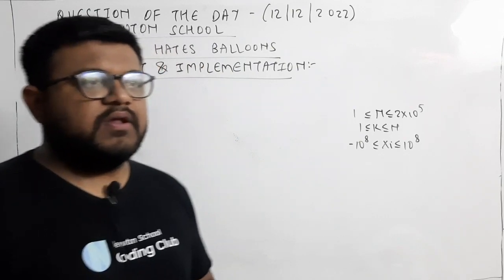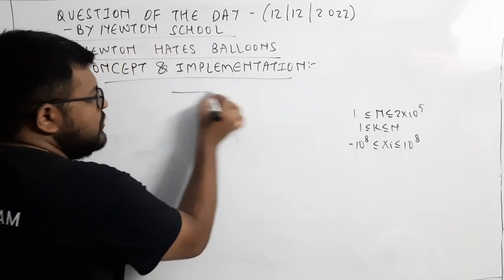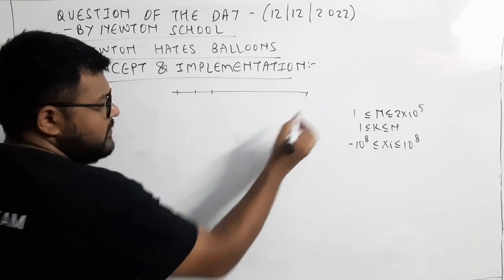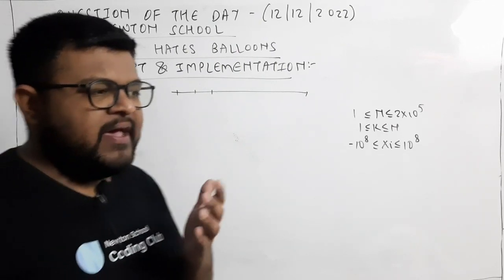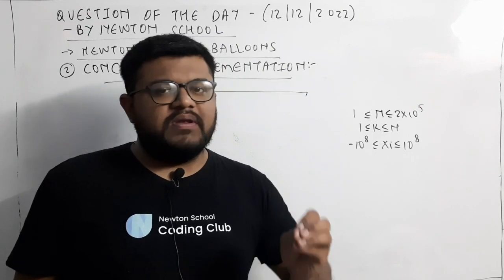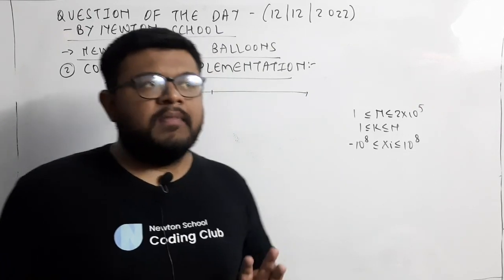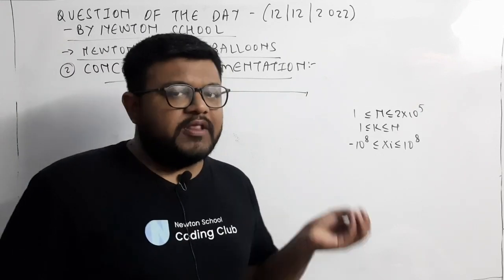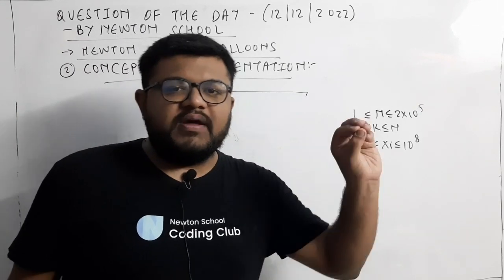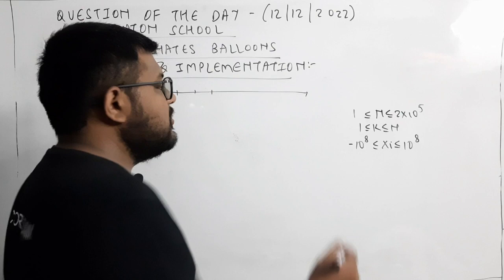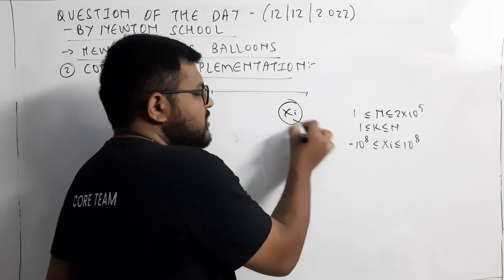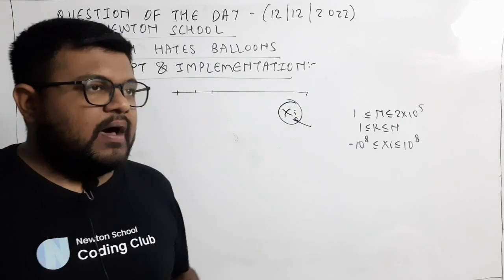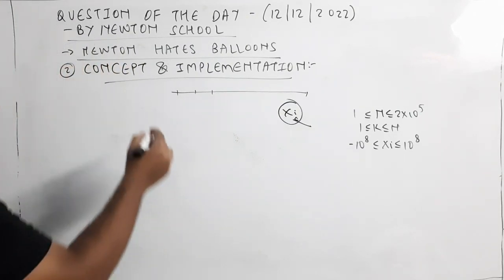अब यहाँ पे अगर concept की बात करें, तो देखो N balloons हैं और वो X axis पे दिये गए हैं। इसमें से exactly K balloons burst करना है, तो उसका minimum time कितना लगेगा। Burst करने का time नहीं दिया गया है, burst करने की method नहीं दिया गया है, इसका मतलब burst करने का time हम negligible मान सकते हैं।